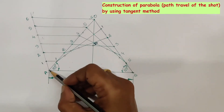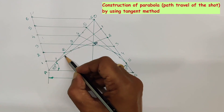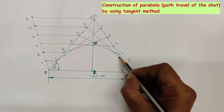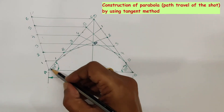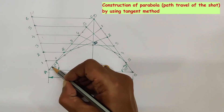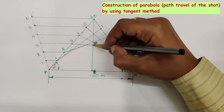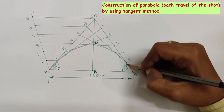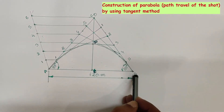Starting point A, passing through P1, P2, P3, P4, P5, and ending point B, draw a smooth curve. The smooth curve is the parabola. Now we are going to draw this curve with H pencil.